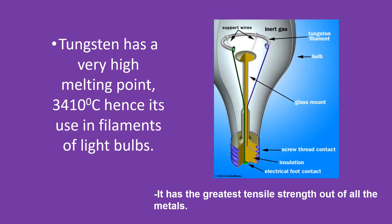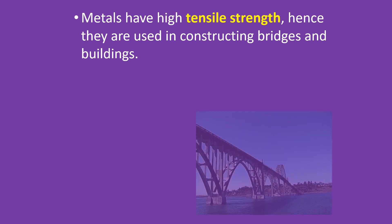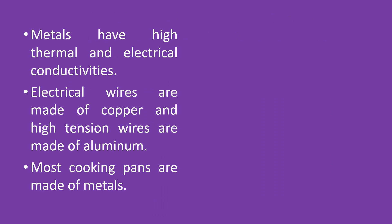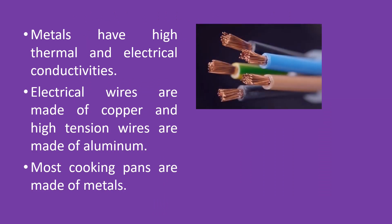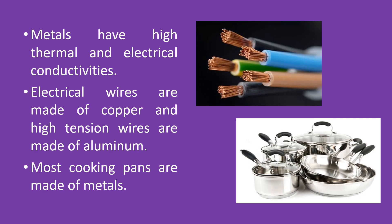Tungsten has a very high melting point of 3,410 degrees Celsius. Hence, it's used in filaments of light bulbs. It has the greatest tensile strength out of all the metals. Since metals have high tensile strength, they are also used in constructing bridges and buildings. Metals have high thermal and electrical conductivities. Electrical wires are made of copper and high-tension wires are made of aluminum, while most cooking pans are made of metals.